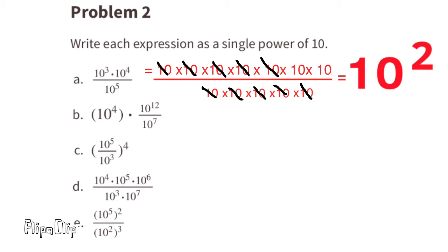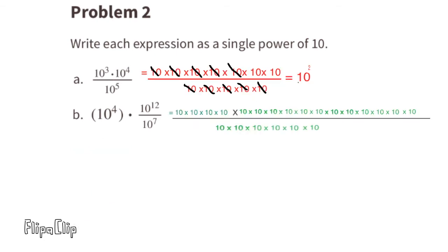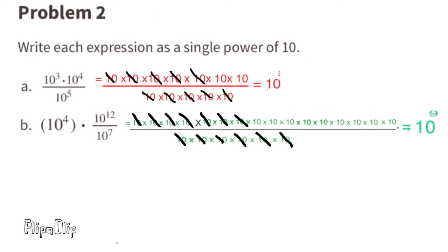B: 10 to the power of 4 times 10 to the power of 12 over 10 to the power of 7. We can rewrite this as 10 times itself 16 times on top over 10 to the power of 7 on the bottom, which is 10 times itself 7 times. All 7 on the bottom cancel out, and 7 on top cancel out. Since 16 minus 7 is 9, the answer is 10 to the power of 9.